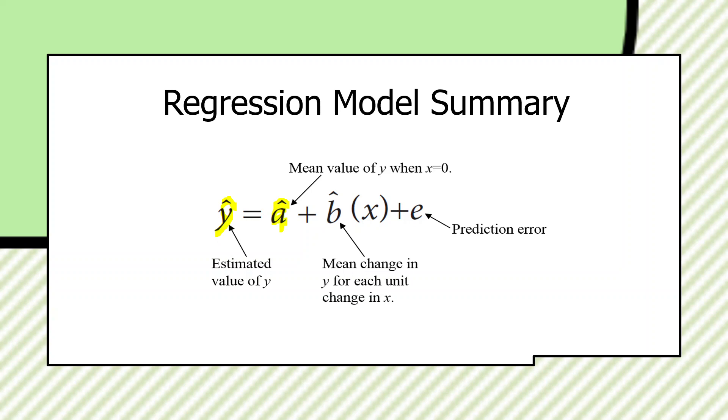And then again, here's the workhorse. B-hat is the mean change in y for each unit change in x. Every time x goes up by one unit, y changes by b-hat. I should emphasize all the terms on the right-hand side of a regression equation are expressed in terms of the dependent variable. A-hat is the value of the dependent variable when x is zero. And b-hat is the change in the dependent variable for every unit change in the independent variable.